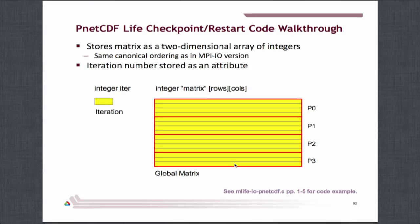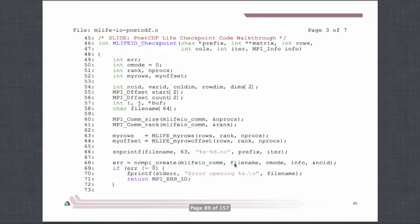Parallel NetCDF — we started working on that back in 2004. It's introducing collective and parallel I/O to the same file format. The big transition selling point was: you have your data set already, we can work with that, we can read it, we can produce a data set that your serial processing tools can understand. All you need to do is use a different API. We deliberately changed the API so that no one would be surprised about the parallelism. It's a pretty thin layer on top of MPI I/O. An API that describes multidimensional arrays is a pretty good fit for creating MPI data types and writing that off.